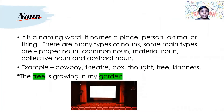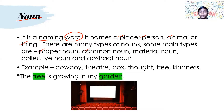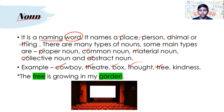What is a noun? A noun is a naming word. It names a place, animal, a person, or even a thing. There are many types of nouns. Some main types are proper noun, common noun, material noun, collective noun, and abstract noun. Examples of nouns are cowboy, theater, bog, star, tree, kindness, garden, even a laptop, etc. For example: 'The tree is growing in my garden' — here tree and garden are nouns.